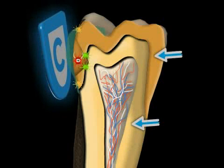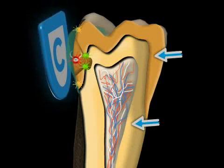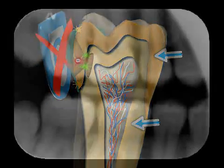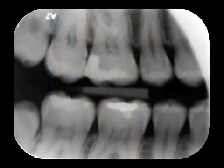Unfortunately, as soon as the caries have reached the dentin, sealing it from the outside is simply not sufficient anymore. In this illustration, you see an X-ray of initial caries. It's the dark spot in the dental enamel marked with the green circle.